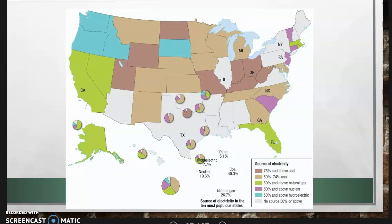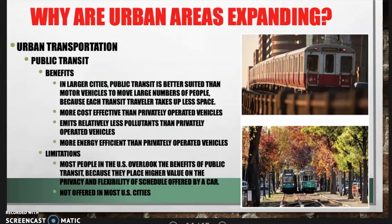This map shows electricity generation by U.S. state, and dependency on non-renewable and polluting fuels to generate electricity does vary by state. Finally, public transportation has many benefits and limitations. People need to not overlook alternative sources of commuting within cities. This is Social Studies with Mrs. Johns.